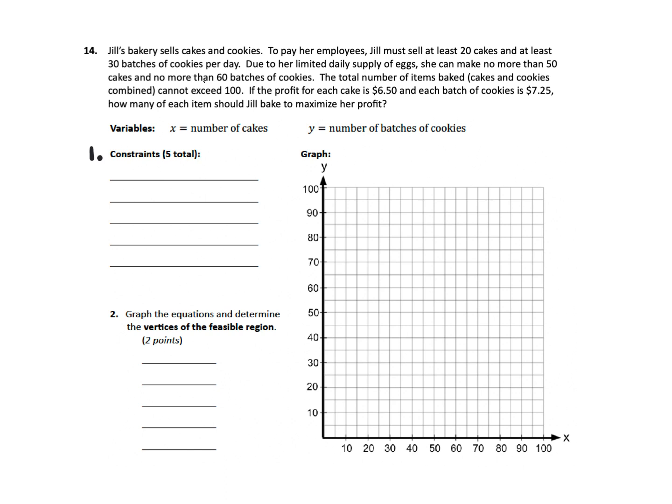What we are going to do is look right here. To pay her employees, Jill must sell at least 20 cakes and at least 30 batches of cookies. At least means that many or greater, so we have greater than or equal to. At least 20 cakes would be, cakes is X, so I would go X greater than or equal to 20. At least 30 batches of cookies, cookies are the Y, so I need Y is greater than or equal to 30.